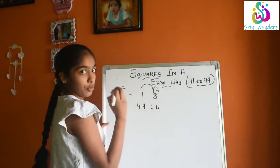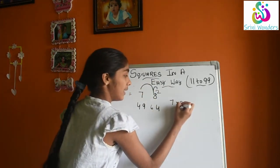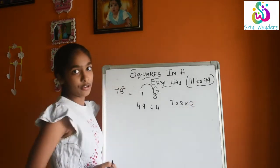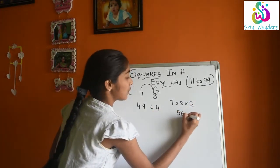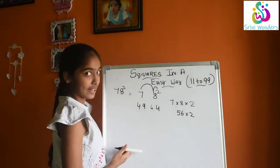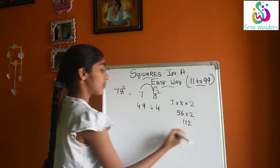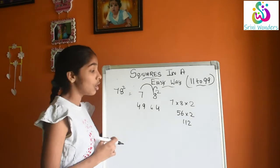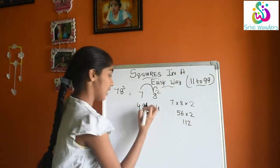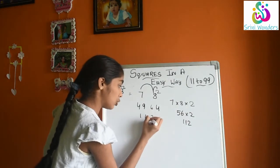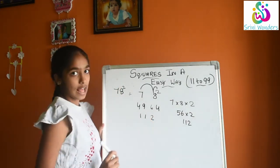So now what we will do? 7 into 8 into 2. 7 into 8 is 56, 56 into 2 we will do, that is 112. Now where we will write 112? We will leave this last digit and write 112.